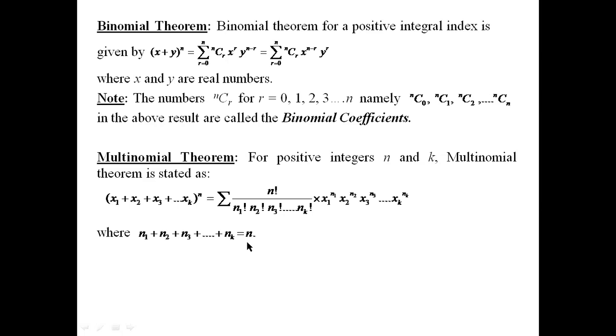Now let's see problems on binomial and multinomial theorem. First question: find the coefficient of x^0 in the expansion of (3x^2 - 2/x)^15. We observe that there are two terms in the required expansion, which can be compared to the form (x + y)^n. So in place of x we have 3x^2, in place of y we have -2/x, and n value is 15. This problem is an application of binomial theorem.